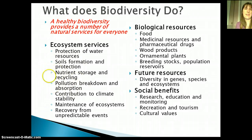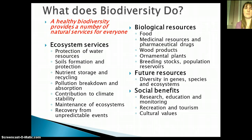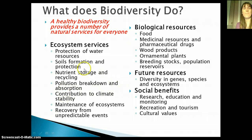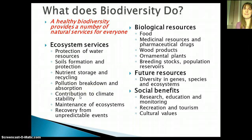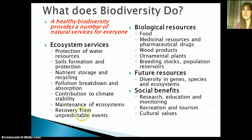Nutrient storage and recycling — things like the carbon cycle and nitrogen cycle — are maintained with better biodiversity. Pollution breakdown and absorption: more biodiversity is better able to address other problems in the ecosystem. Climate stability is maintained with biodiversity, as is maintenance of the ecosystem itself. Recovery from unpredictable events is also maintained with greater biodiversity.